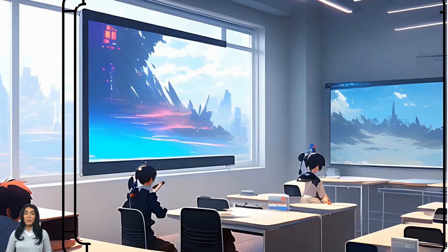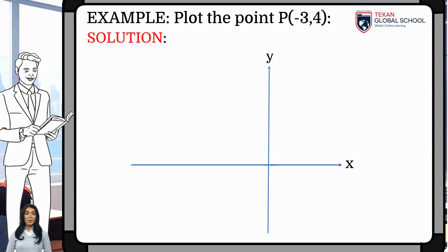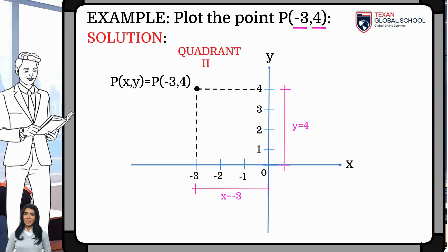In this other example, we will graph the point P with coordinates (-3, 4). We first draw the coordinate axes. The abscissa is 3 units; however, since it is negative, it is located to the left. The ordinate is 4 units. With these two distances, we can plot the point on the plane. We can see that the point is located in quadrant 2, since the abscissa is negative and the ordinate is positive.